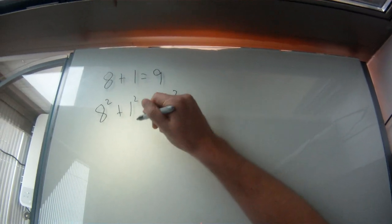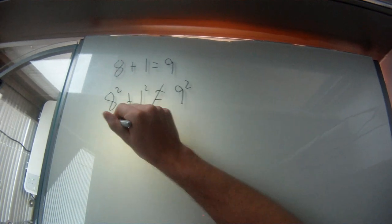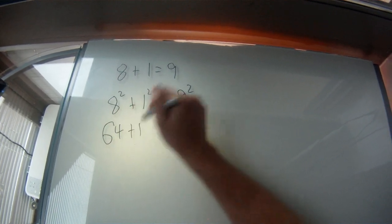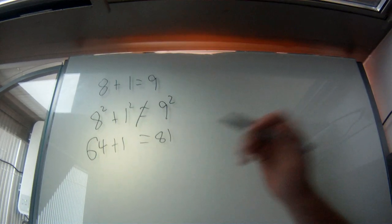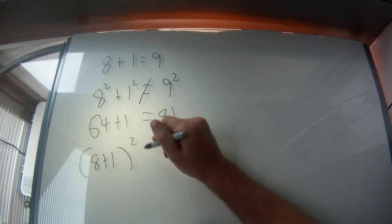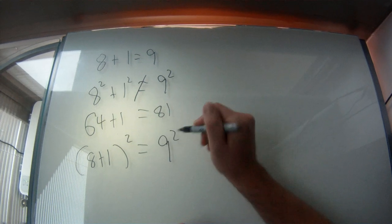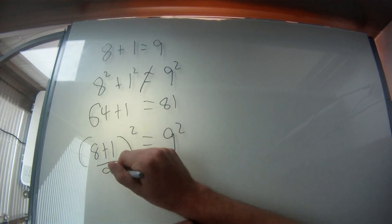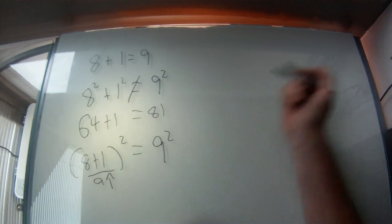Except what you realize is that this is not the case at all. That means that 64 plus 1 equals 81. It's not true. You need to put 8 plus 1 in parentheses and then square it before it works the same way, because as you will see, 8 plus 1 is the same thing as 9.